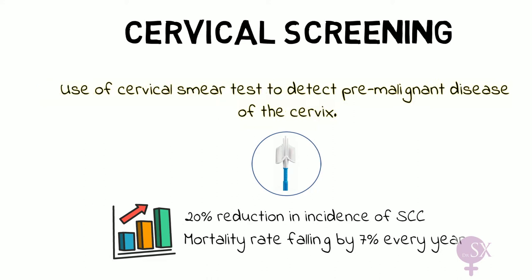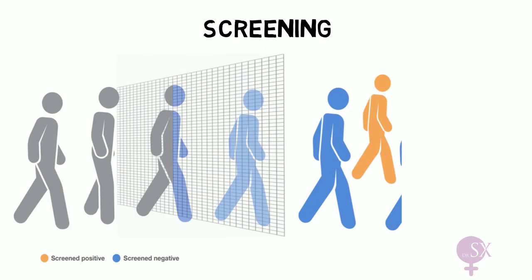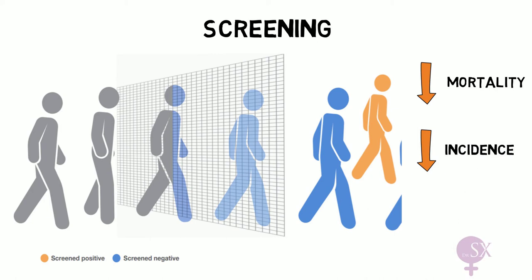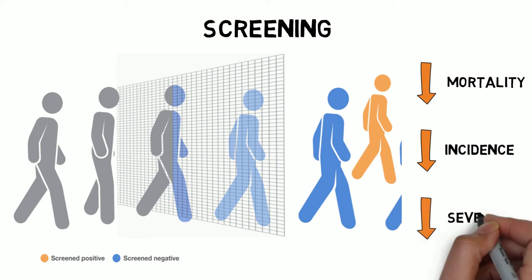A quick note on screening: screening is a rough sorting process, similar to a sieve where we separate those people who probably do have the condition from people who probably do not. It's not 100% accurate, but gives us an idea if a person is at risk or risk-free. The aims of a screening program are to decrease mortality from the condition, decrease the incidence of the condition, and decrease the severity of the condition.